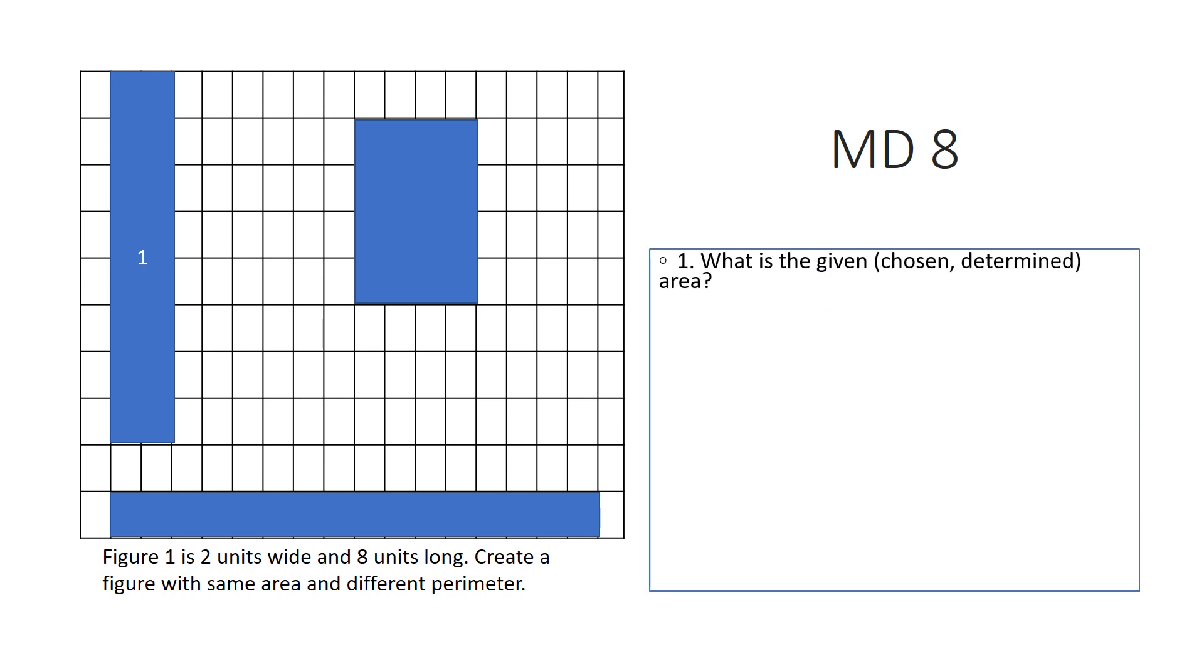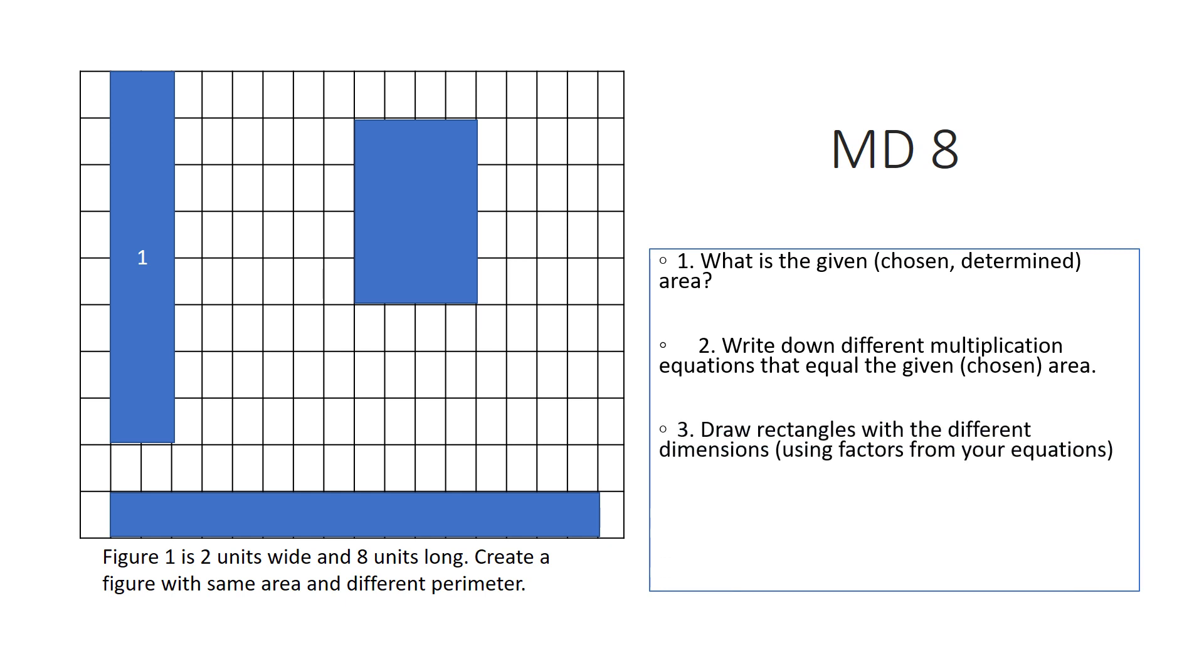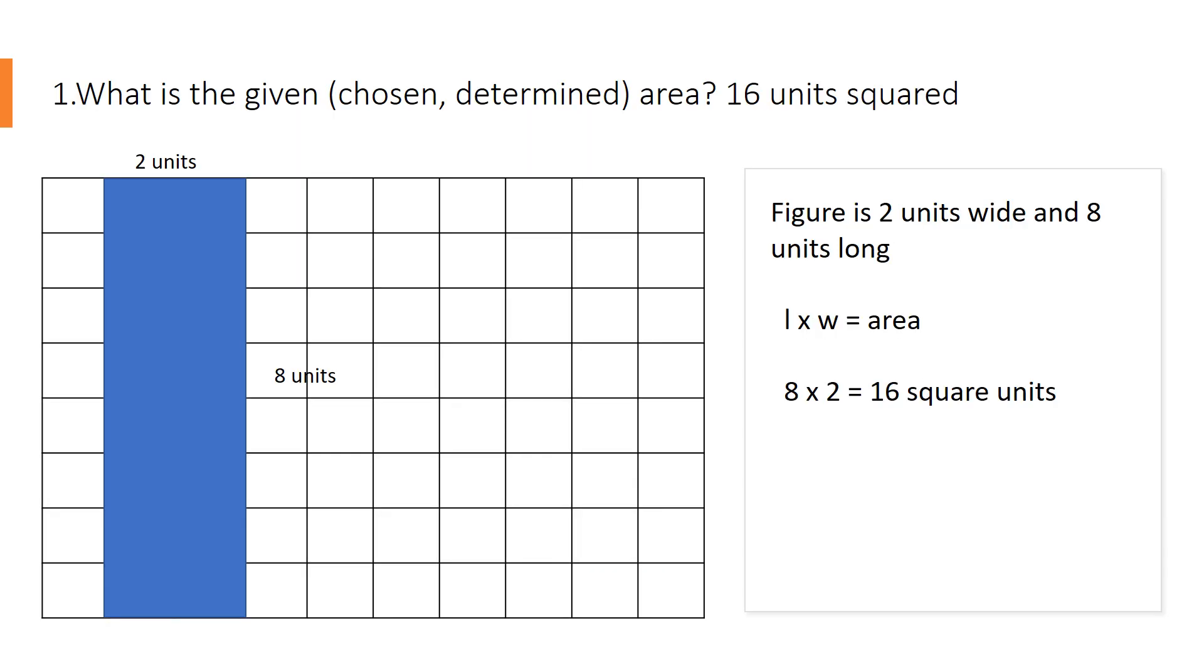So number one, first of all, what is the given area that we're looking for? Number two, after we know the area we're looking for, we're going to write down the different multiplication equations that equal that area. Then number three, we're going to draw rectangles with those different equations that we know that equal that area. So make sure you know your math facts. It's super important. Then number four, determine the perimeter of each rectangle that equals the equation of the area that we're looking for. Okay, so let's go over each step separately.